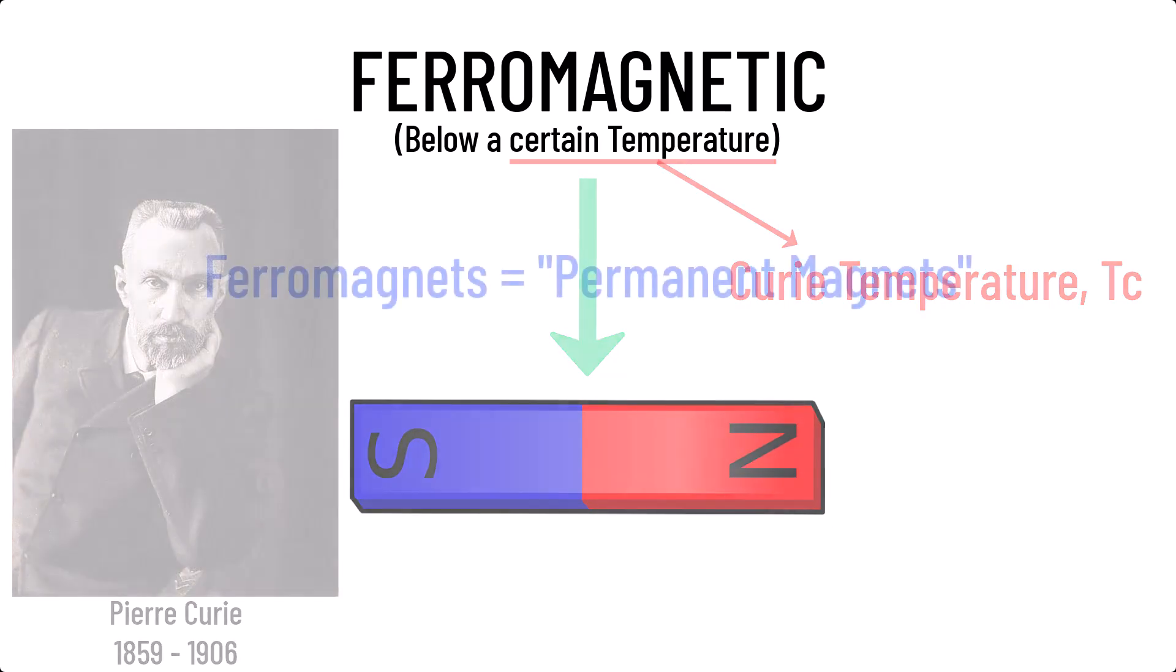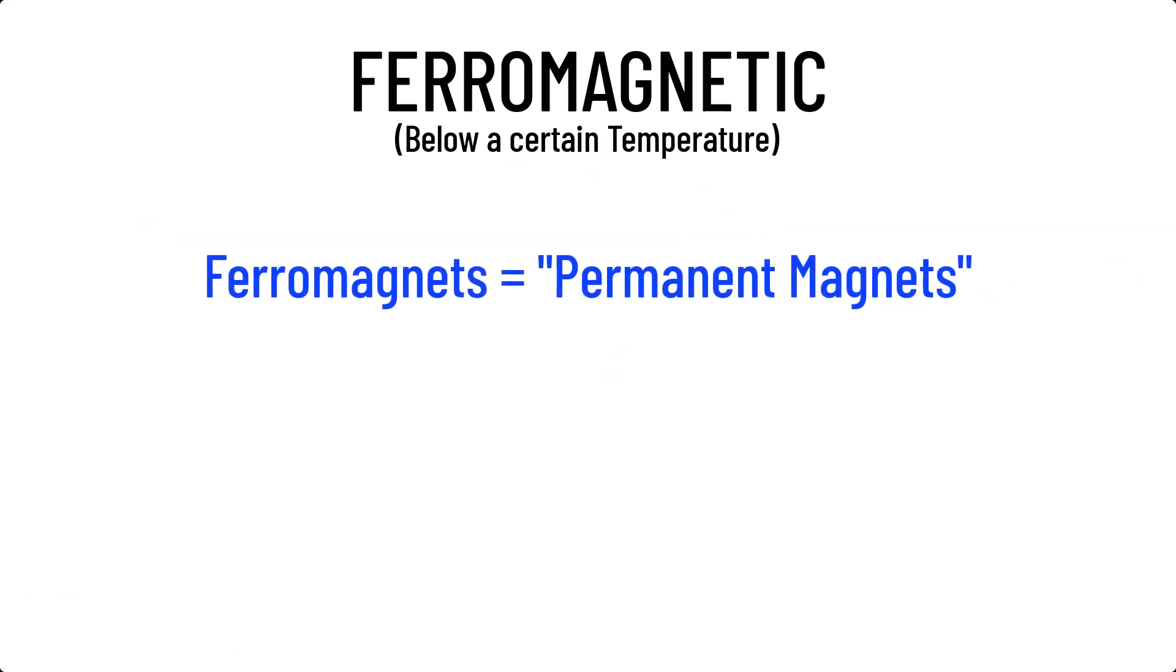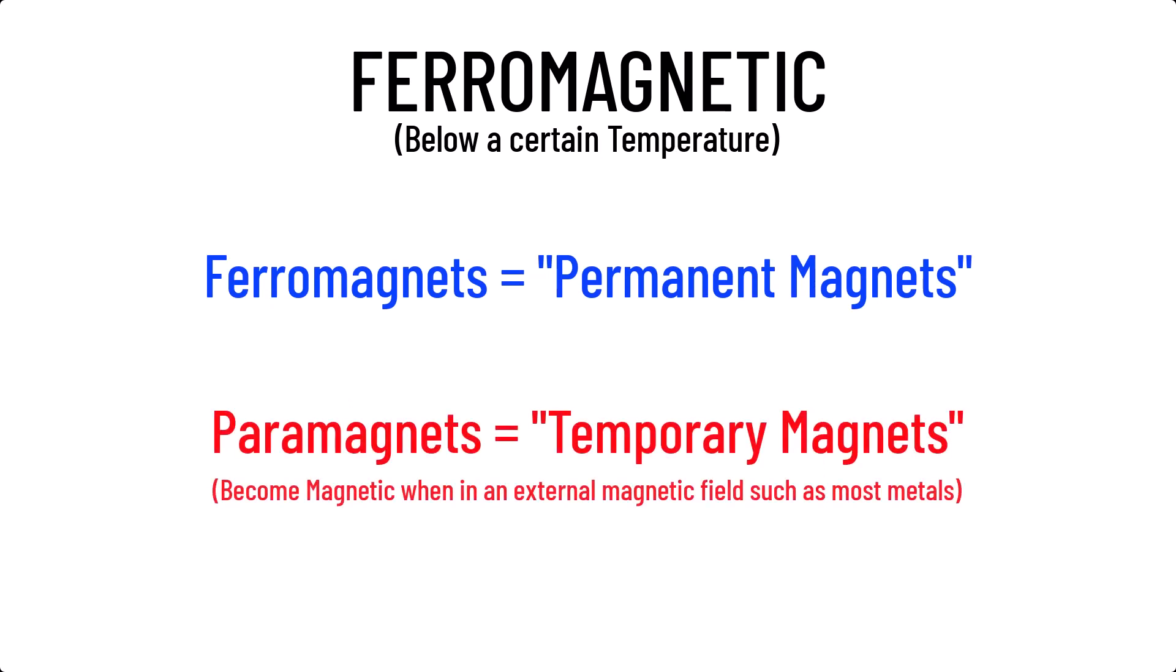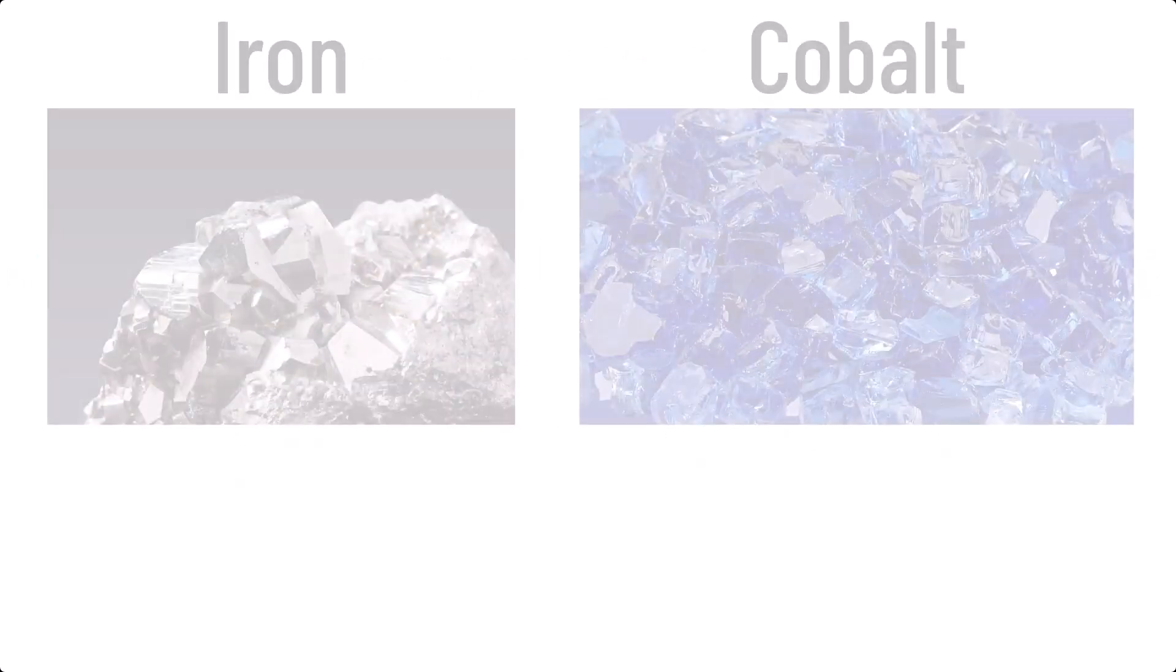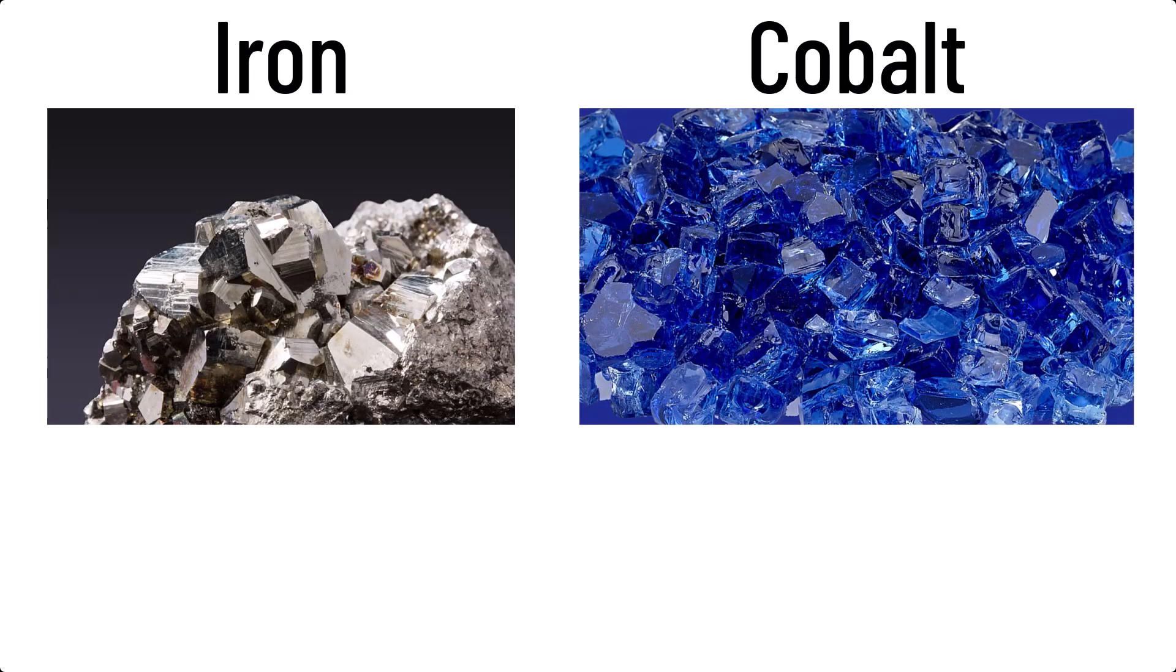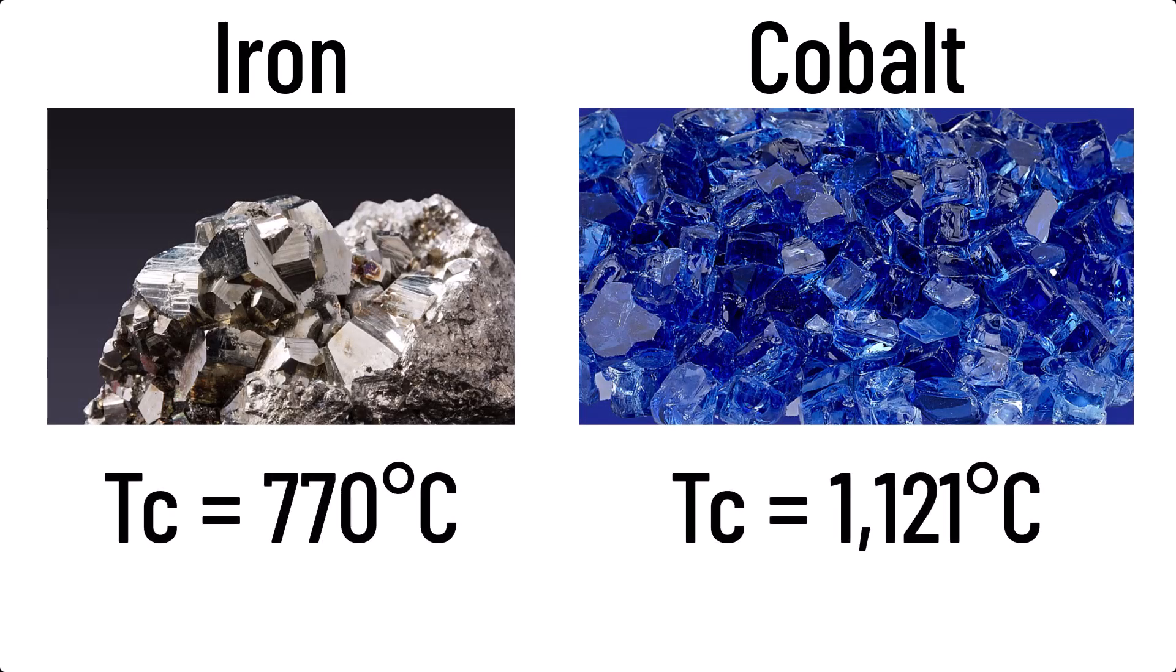Ferromagnets are permanent magnets, as is the case with bar magnets. They show their own permanent magnetic field, as opposed to paramagnets, which are materials that can be magnetized when in the presence of an external magnetic field, but don't generate their own. Above the Curie temperature, magnetic materials are paramagnets, and below it, they are ferromagnets.